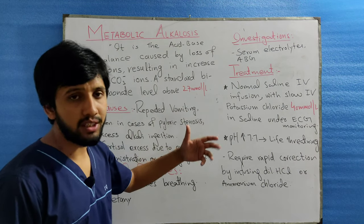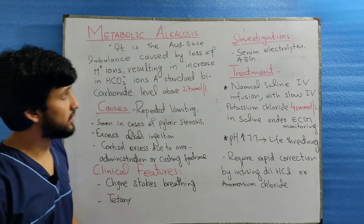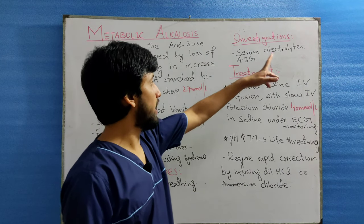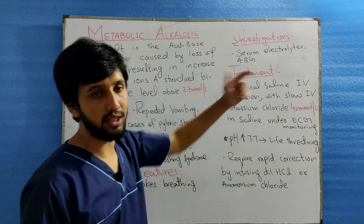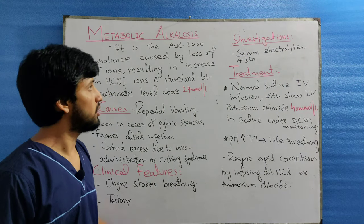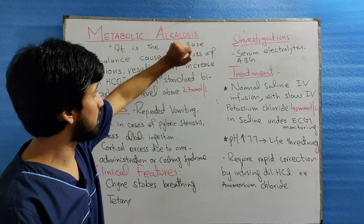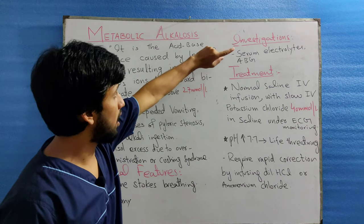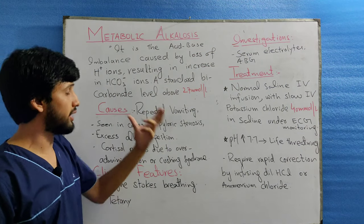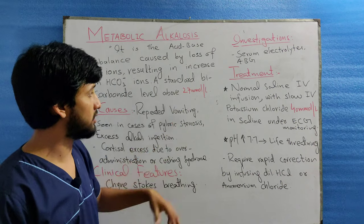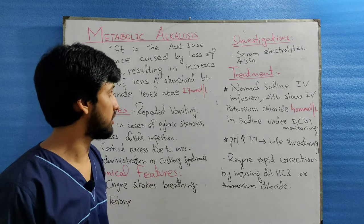What investigations will we do for metabolic alkalosis? Number one is serum electrolytes, and the second one is arterial blood gas analysis. In serum electrolytes, there will be a raised level of bicarbonate ions, that is above 27 millimoles per liter.